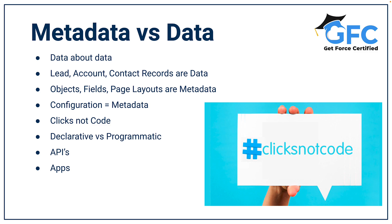Just to clarify: declarative customization is done with clicks, whereas pragmatic customization is done through code. Records are data — so account records, contact records, and opportunity records are all data — whereas metadata is the object, the page layouts, and its fields. It's not the data that is within the field, but the field itself.